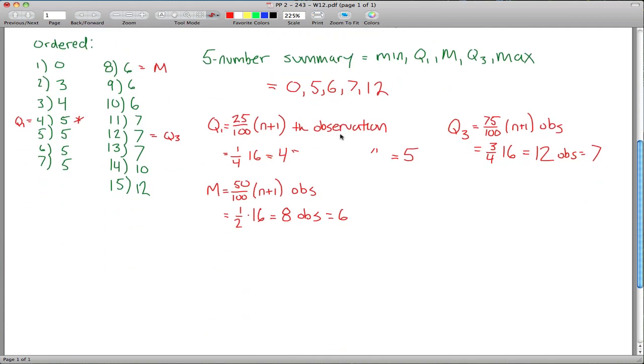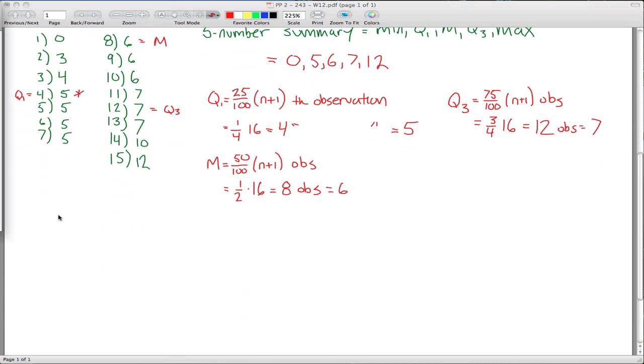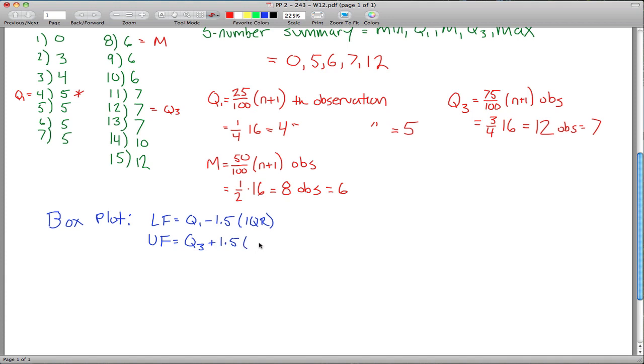Now we want to draw a box plot for this data. To figure out the box plot, we need the lower fence and the upper fence, and the way you figure those out, is the lower fence is Q1 minus 1.5 times IQR, interquartile range, and the upper fence is the third quartile plus 1.5 times the interquartile range. So if we're going to calculate these, we better figure out what is the interquartile range. That's just Q3 minus Q1, and we calculated those above to be 7 and 5 in this case. So our interquartile range is 2.